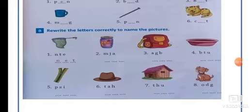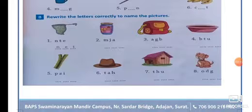Now, correct joh hume letters diye hai, hume kya karna hai usse? Correct way me set karna hai. First kya diya hai? N, T, E. N, T, E ko correct kya se likti hai? Net. So, N, E, T.